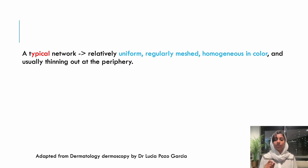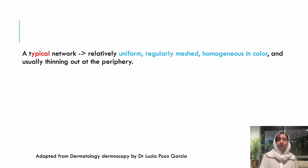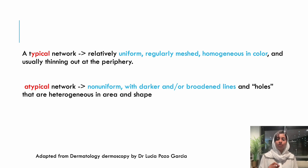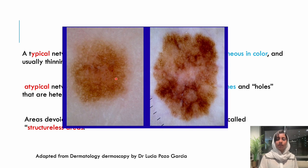Typical networks are mostly present in benign lesions, whereas atypical networks are present in malignant lesions. Initially the dermoscope was used basically to differentiate benign from malignant lesions, and later it was applied to inflammatory and non-inflammatory lesions as well. A typical network is relatively uniform, regularly meshed, homogeneous in color, with thinning toward the periphery. An atypical network is more non-uniform, with darker and broader lines and holes that are heterogeneous in area and shape. A structureless area indicates a region where there is no pigment network.